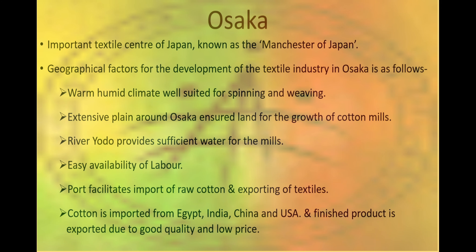Osaka, located in Japan, is known as the Manchester of Japan due to humid climate, extensive plain, and the river Yodo. Availability of labor and ports help in import of cotton from Egypt, India, China, and USA. These ports also help in export of finished products.